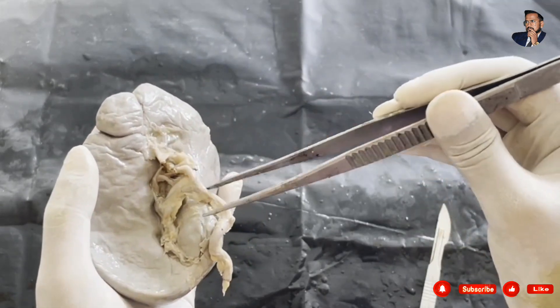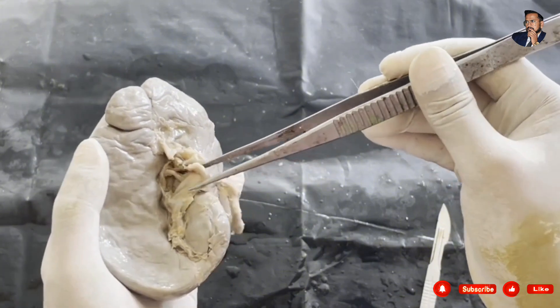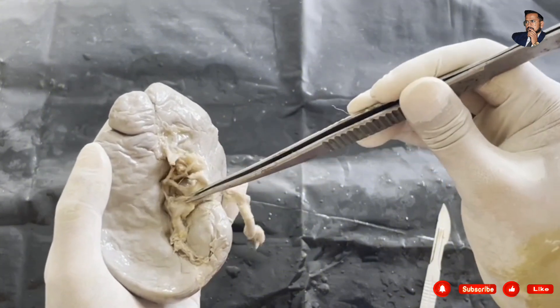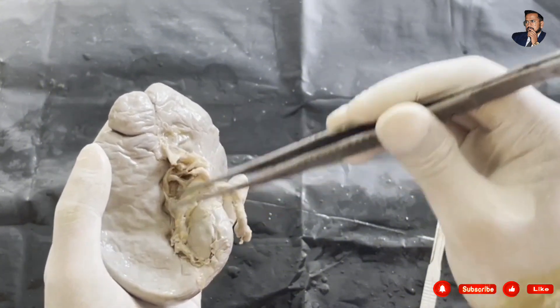This is the hilum of the spleen which consists of the splenic vessels, splenic artery, splenic vein, as well as the nerve supply.